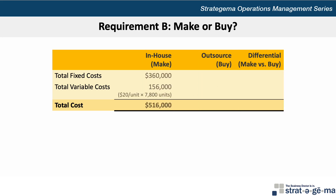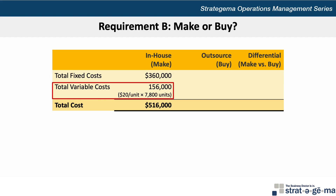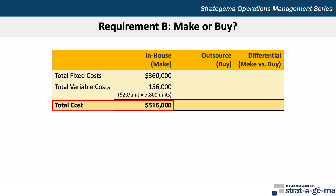To make in-house, the fixed costs are $360,000, and the variable costs are $156,000, calculated as $20 per unit times 7,800 units. The total cost then is $516,000.